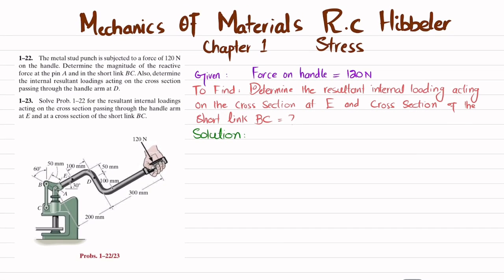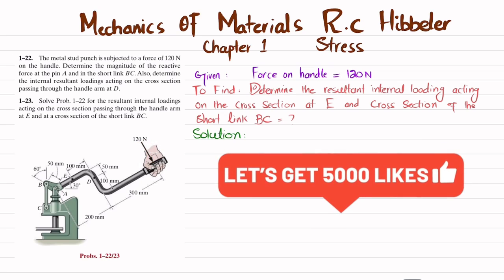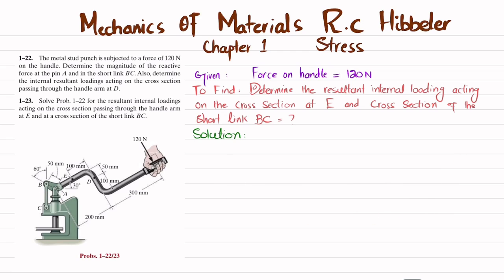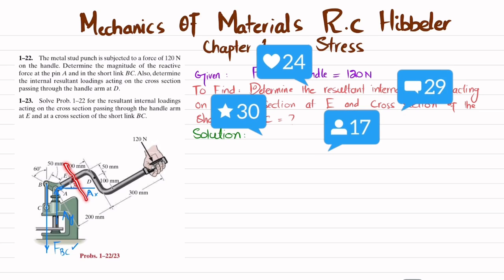A 120 Newton load is applied on the handle. We have to find the internal loading at cross-section E and in link BC. First step: if you remove this link at point B, you replace it with a reaction force. This reaction force that the link applies at point B is equal to FBC. When you remove the pin support at point A, you have horizontal reaction force AX and vertical reaction force AY. We will find only FBC because we will then work on the right-hand side portion.